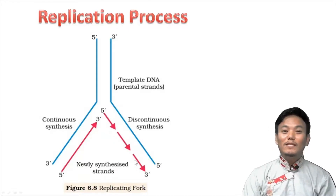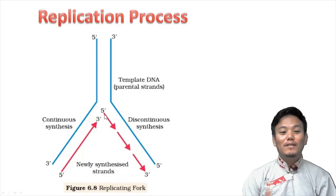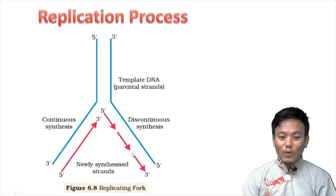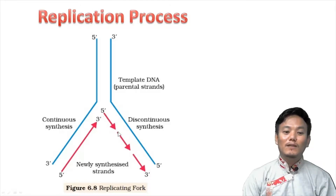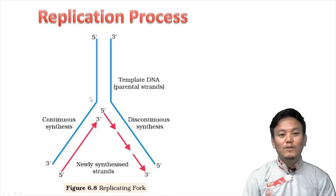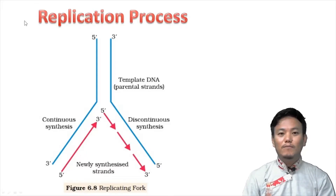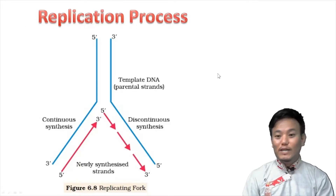The Okazaki fragments are later joined together to form a continuous DNA strand by another enzyme called DNA ligase. DNA ligase joins these Okazaki fragments so that they become a continuous DNA strand. So two important enzymes are DNA polymerase and DNA ligase. This picture of the replication process is very important, and after explaining the process in words, I will attach a short animation video about DNA replication in the next slide.